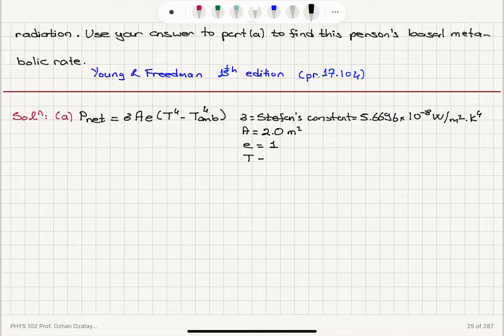The temperature of the skin is 30 degrees Celsius, 30 plus 273.15, which gives us 303.15 Kelvin as the absolute temperature.